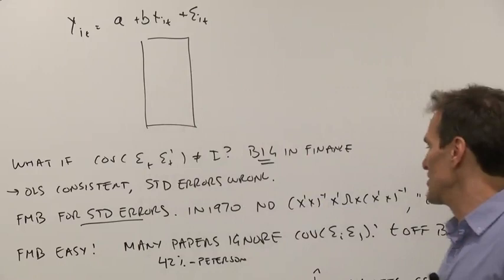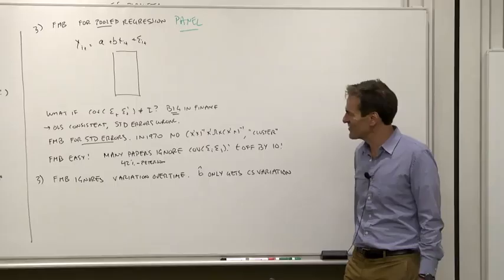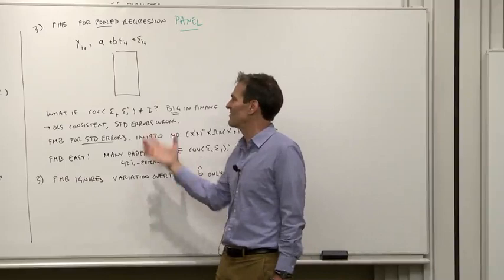And interestingly, many papers to this day ignore cross-sectional correlation of the error terms. Mitch Peterson at Kellogg added up finance papers and found that 42% of a sample of finance papers simply ignored cross-sectional correlation of the error terms, resulting in t-statistics off by a factor of 10.